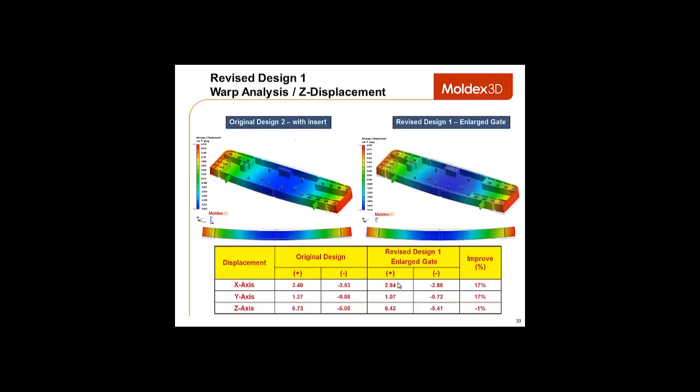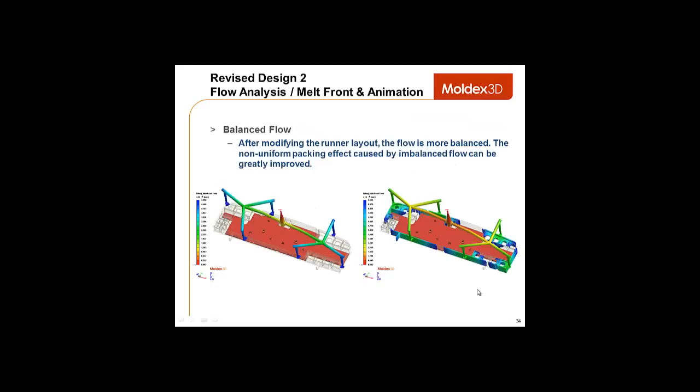Through this quick comparison between the revised design and the original, you can see an improvement. For this design, we adopted a three-point model system and completely changed the runner layout. After modifying the runner layout, we found that the flow was more balanced. Thus, the non-uniform packing effect caused by the imbalanced flow can be greatly improved.